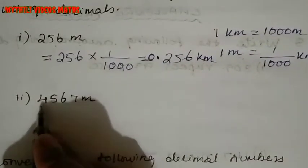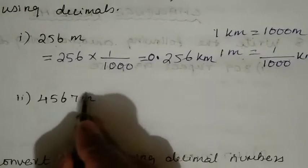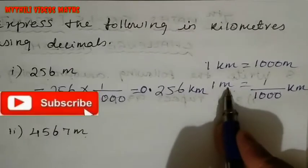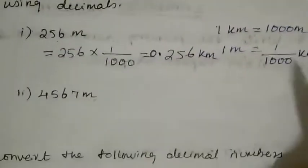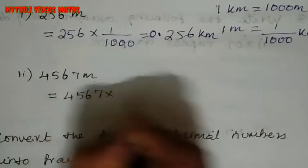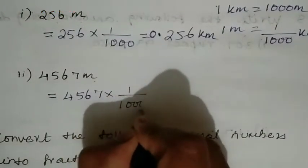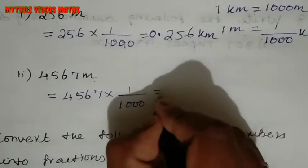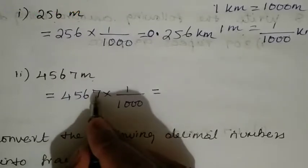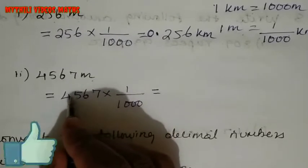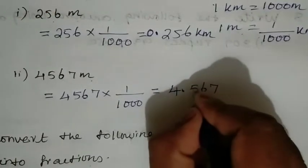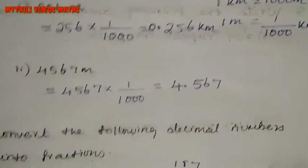It's the same method for 4567 metres. Since 1 metre equals 1/1000 kilometre, multiply 4567 by 1/1000. Move the decimal point 3 places to the left — 1, 2, 3 — so the answer is 4.567 kilometres.